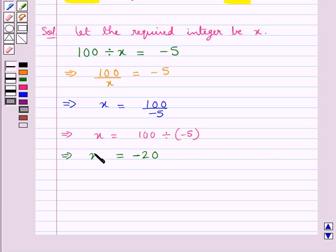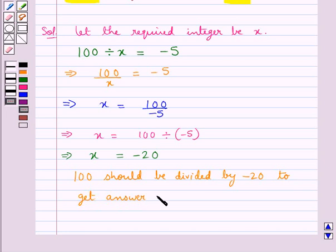That is we get x is equal to minus 20. So we can now say that 100 should be divided by minus 20 to get the answer as minus 5.